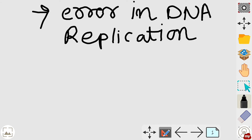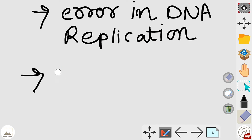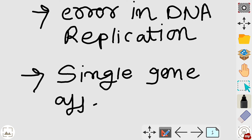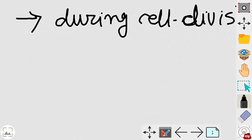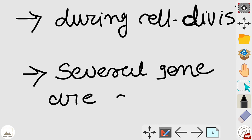In gene mutation, only a single gene is affected. In chromosomal mutation, several genes are affected.